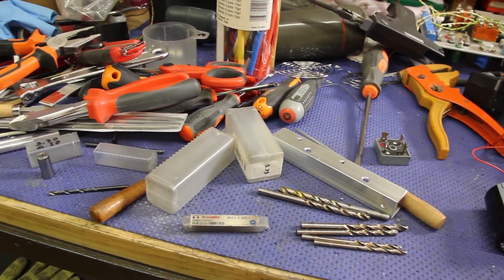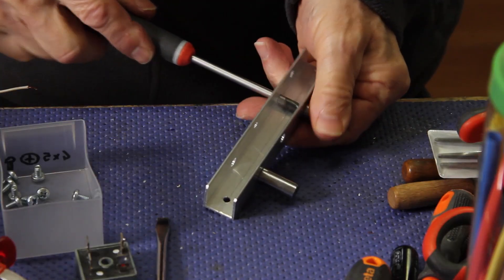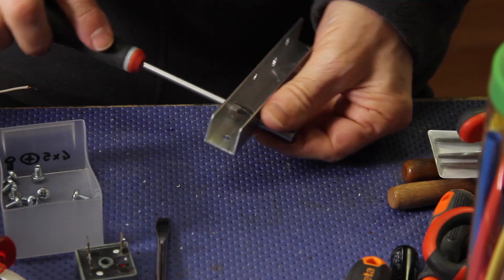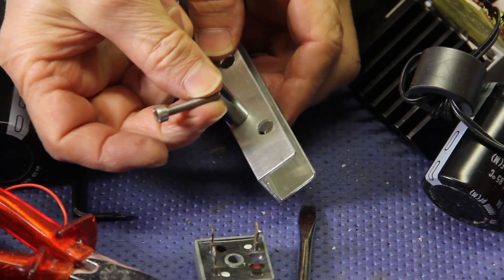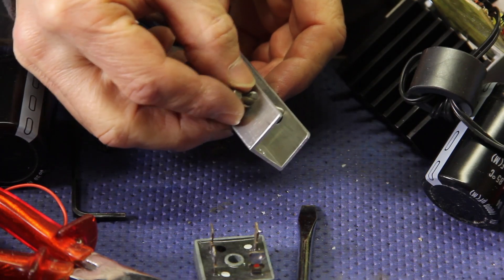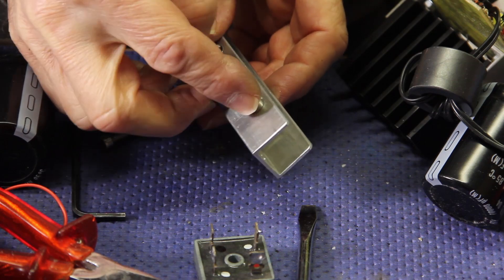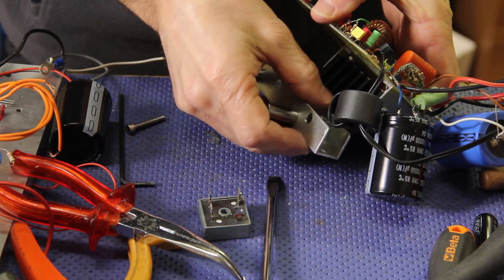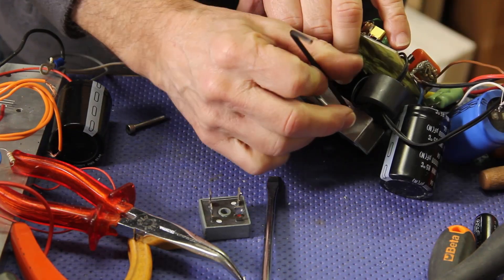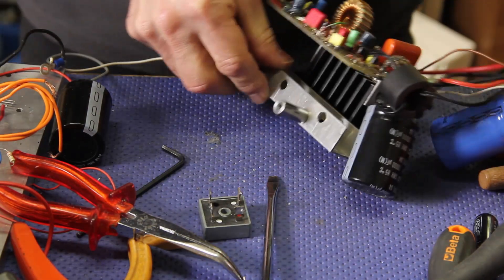Next up, I need to make the brackets that will hold the boards and their chunky heatsinks in place. And as you will see later, the capacitors will be secured using bits of plastic pipe glued right onto the enclosure floor.